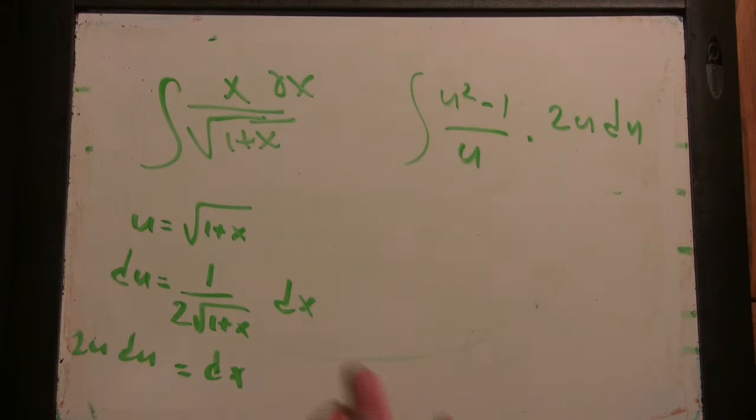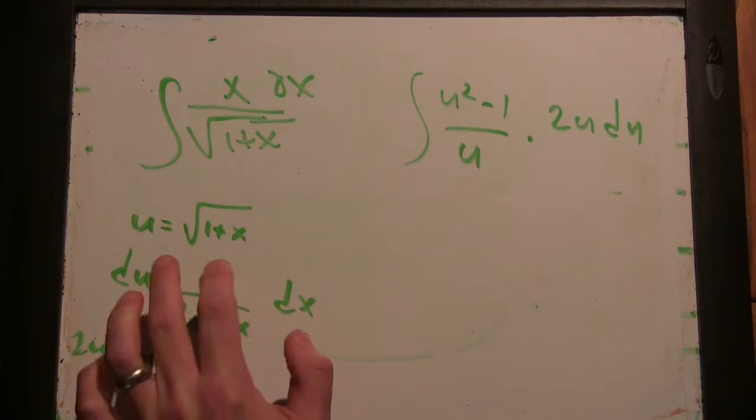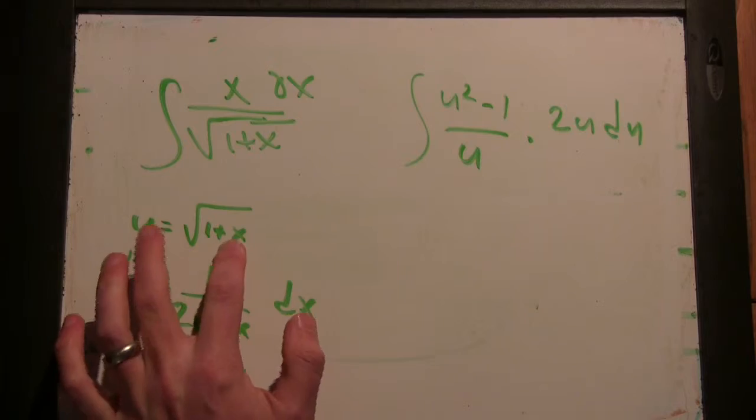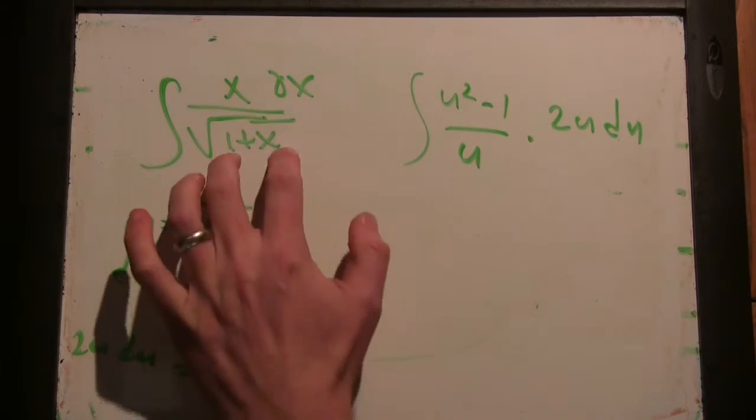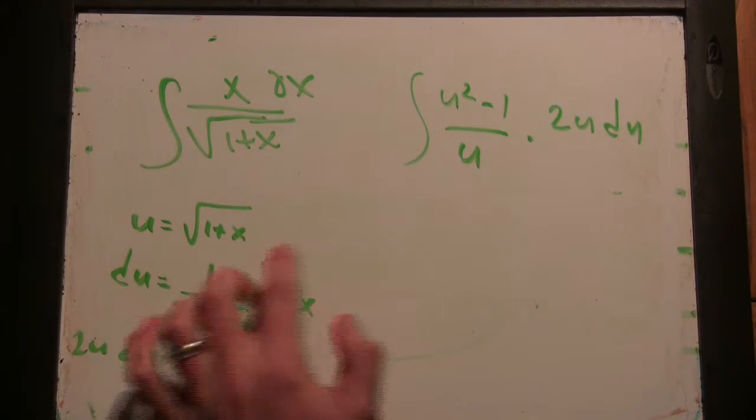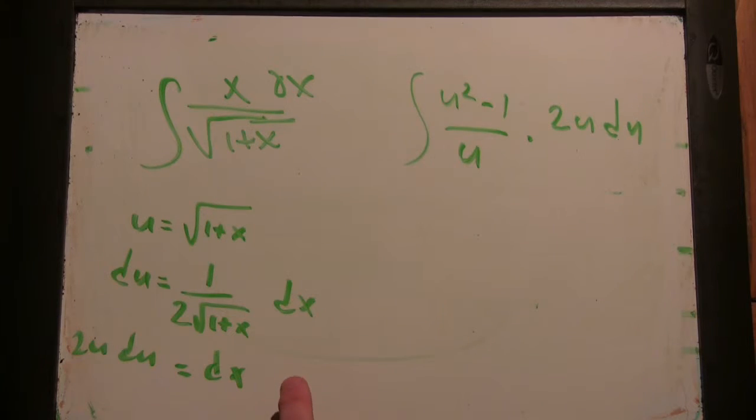Alright, let me make sure I follow. So, u squared minus 1 is x. Okay, good. Divided by u. Good. And then dx, you said, was 2u du. Okay, great. Good job.